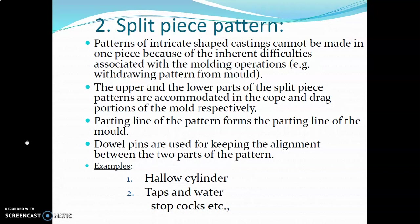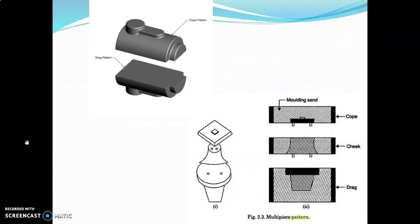The parting line of the pattern is formed depending on the mold. Examples made from the split piece pattern include a hollow cylinder, a pipe, and a water stock bound. As you can see in the diagram, the upper part goes to the cope and the second lower part goes to the drag. We made two pieces and they were fitted in the upper and lower parts. When combined together they produce the final component, so ultimately you will get one piece as the output.